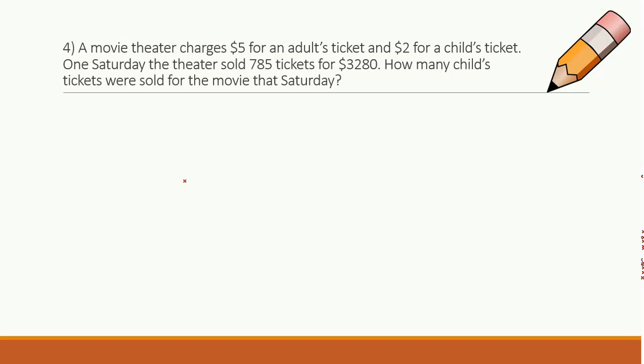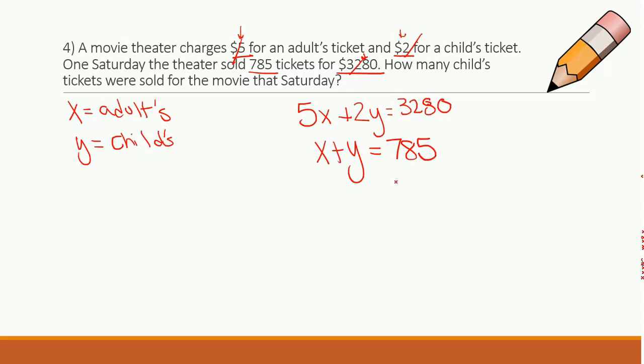Movie theaters. So a movie theater charges $5 for an adult ticket and $2 for a child's ticket. One Saturday, the theater sold 785 tickets for $3,280. How many children's tickets were sold for the movie that Saturday? So I know I'm talking adult tickets, and I'm talking children tickets, right? So let's write our equations. I have $5, $2, 785, and $3,280. It looks like our money is all going to mate together, right? So for each adult ticket, I'm going to pay $5, basically 5x, right? And 2 for every children ticket, so 2y, equals the total money I raked in. I'm left with 785. Well, x plus y has to equal 785 tickets, right? That's got to make sense. I only sold adults and children. I didn't sell anything else.